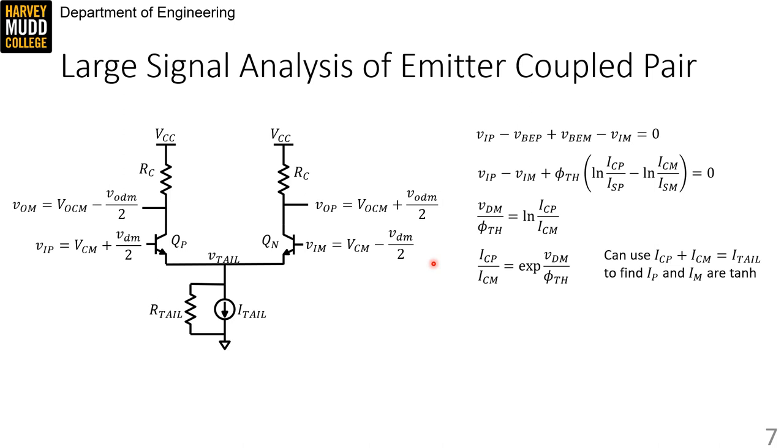Plotting that out looks like this. When VDM is very positive or very negative, then ITAL is steered fully to the ICM branch or to the ICP branch. However, when VDM is close to zero, then we see this exponential shaped shift of current from one branch to the other. When VDM is zero, ITAL splits evenly between the P and M branches.